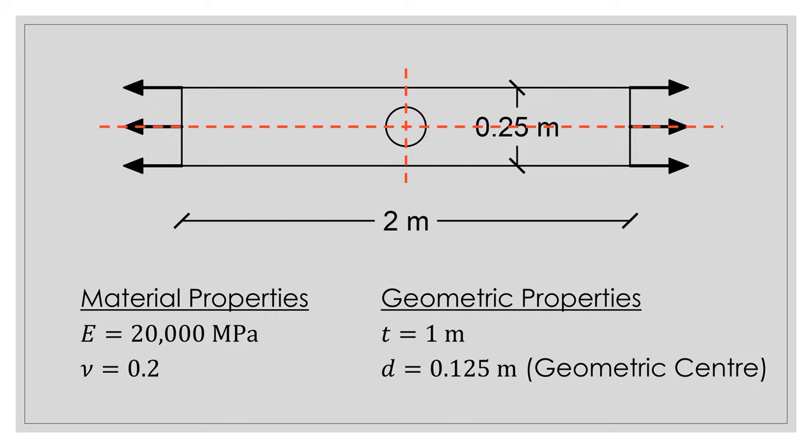Instead of creating the whole model, I can only create a quarter of the model, which is great for computation because instead of having all of those elements, I only need a quarter of those elements — so all of my calculations are reduced by a quarter. If you ever go on to more advanced finite element topics, utilizing symmetry or any way to decrease computation time is actually very valuable. That's the goal of this tutorial — showing you how to use symmetry boundary conditions. Let's jump into Abacus.